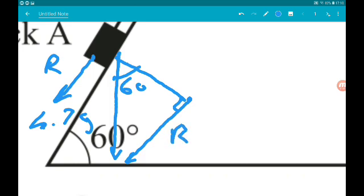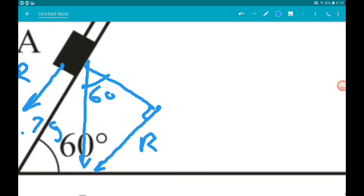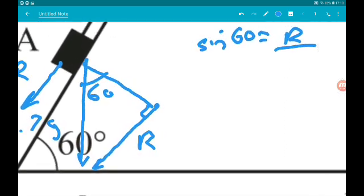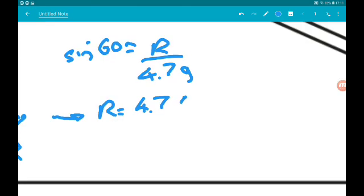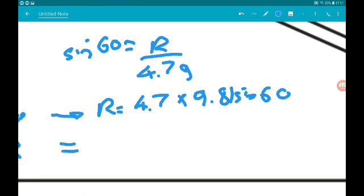So this force again is called R. So by SOHCAHTOA, we know sin of 60 is R over, and the hypotenuse is 4.7g. So R is 4.7g sin 60. Now they want the answer to 3 significant figures, so we'll go to 3 sig figs. So times 9.81 sin of 60. Put that in your calculator, and you will get 39.9 N.